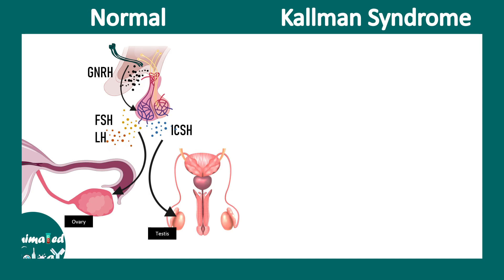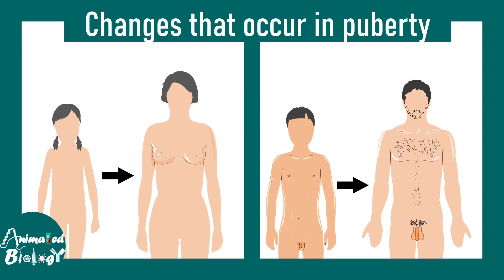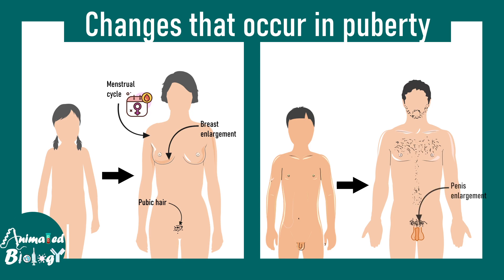In the normal scenario, GnRH neurons are properly located and secreting GnRH. But in Kallmann syndrome, GnRH neurons are fewer in number because many did not reach the hypothalamus during proper brain development. This is why FSH, LH, and ICSH levels in males are always low, which cannot trigger puberty properly, leading to delayed or completely absent puberty. During puberty, females would normally start menstrual cycles, experience breast enlargement, pubic hair growth, and fat deposition in thighs, buttocks, and breasts, while males experience penile enlargement and hair growth — all of which are delayed in Kallmann syndrome.